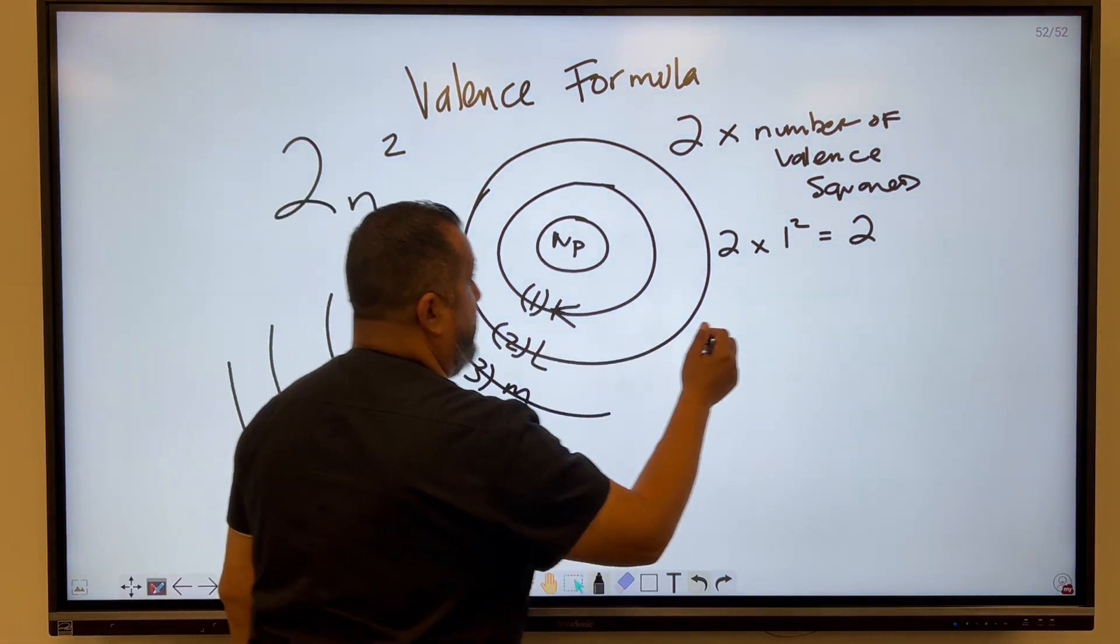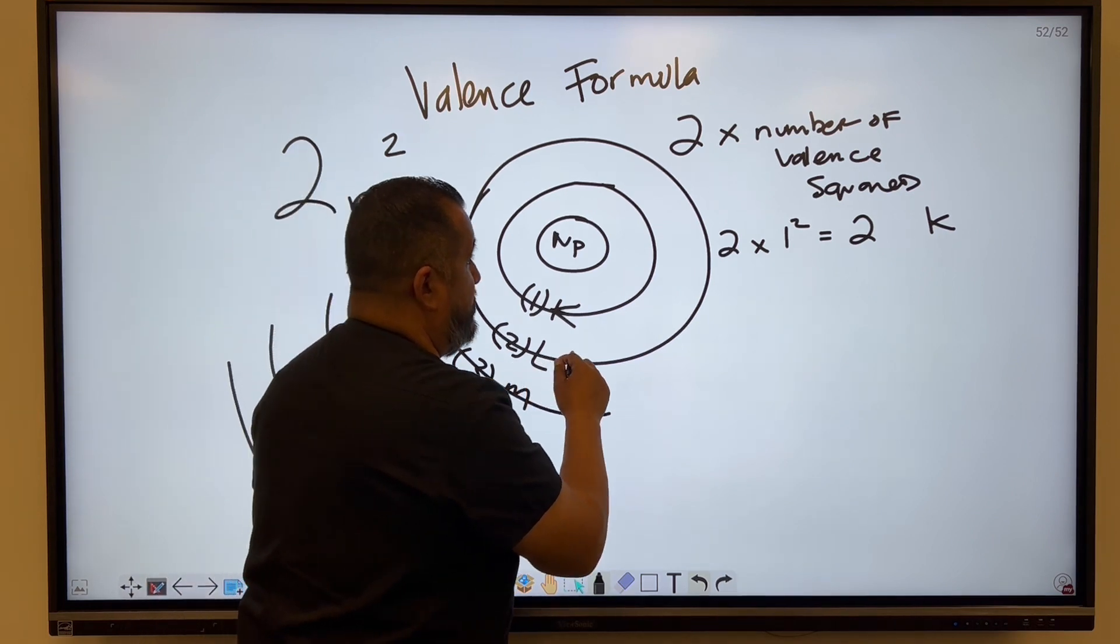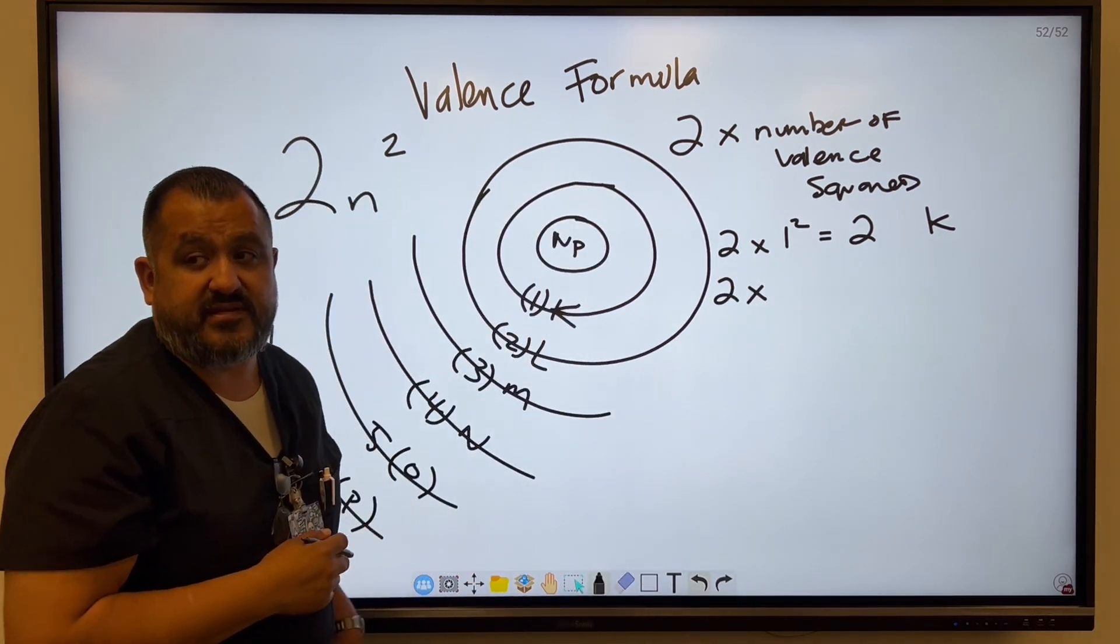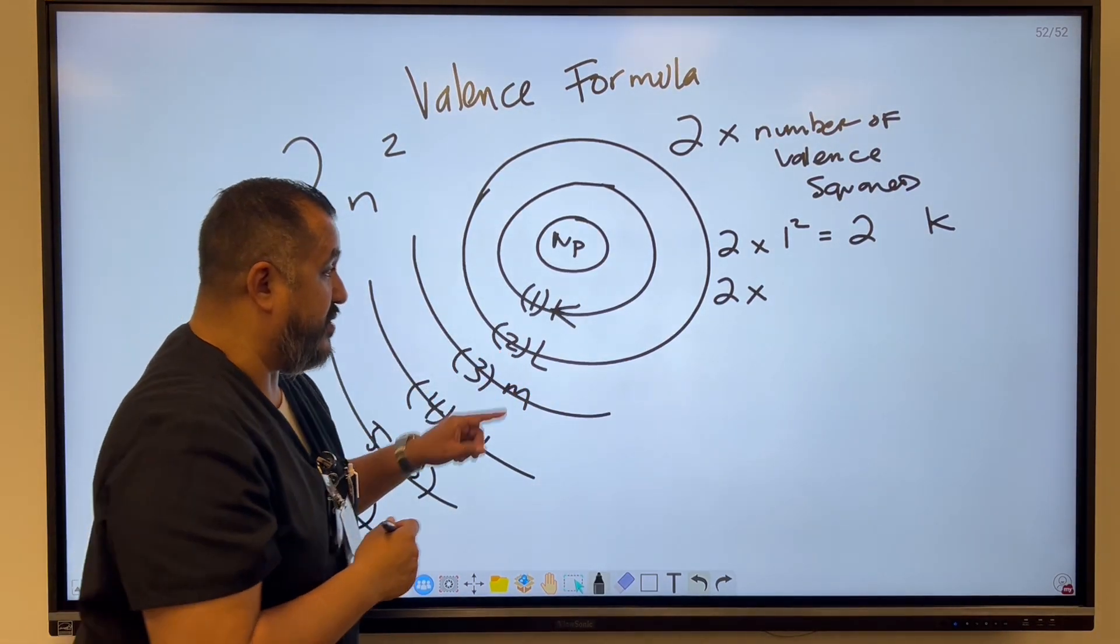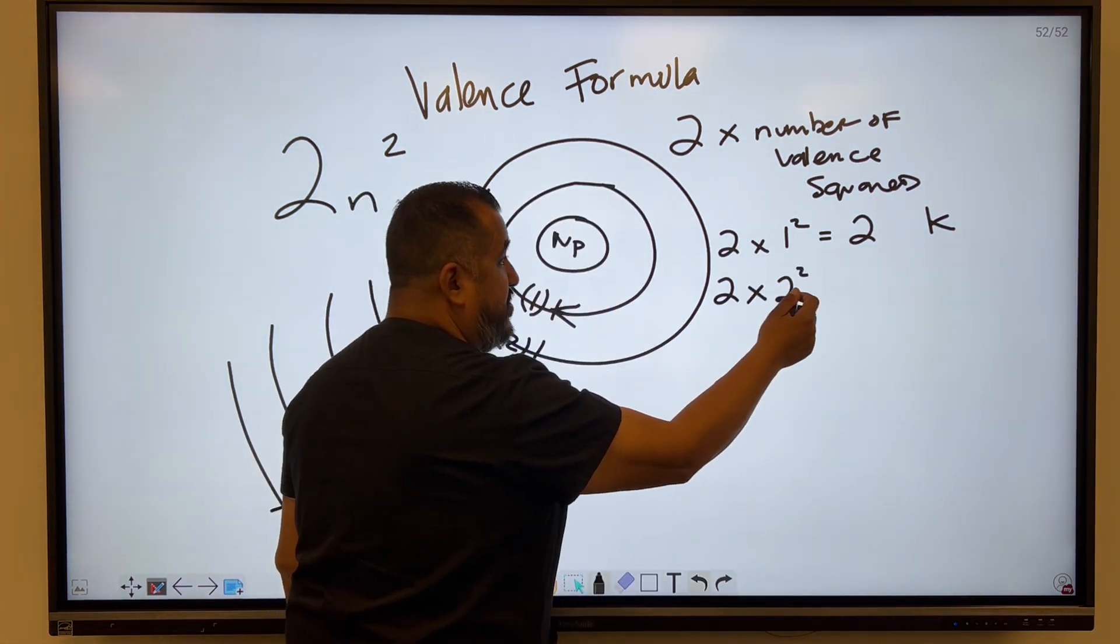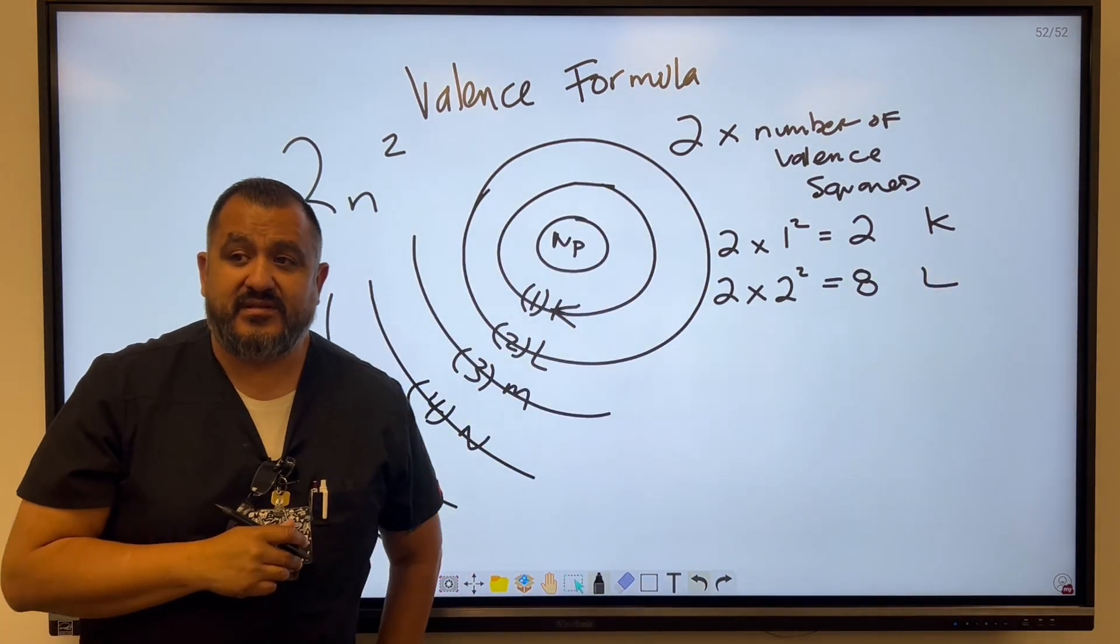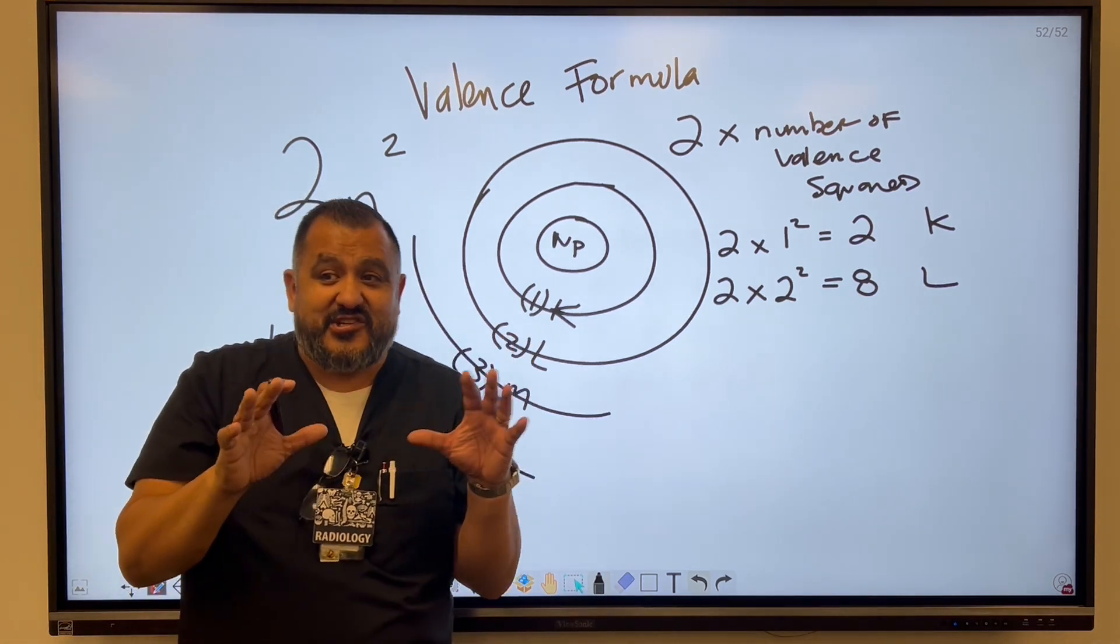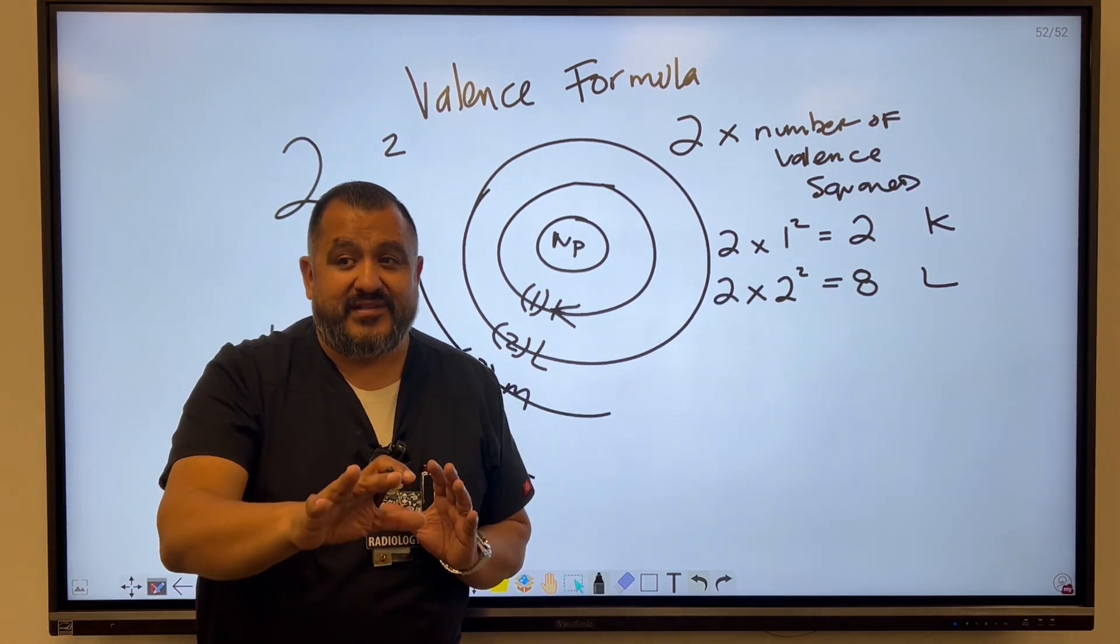Now let's do the second one. So this is the K shell. Let's do L. So L is the second energy level. 2 is a constant, right? So 2 times the number of the valence squared. So that's the second number. That's going to be 2 squared. So 2 times 2 is 4, times 2 is 8. So the L shell can hold up to 8 electrons. Now you remember the rule of octet, right? It's happiest state of inertia. It's nice and calm. They like to have 8 electrons. That's the rule of octet.